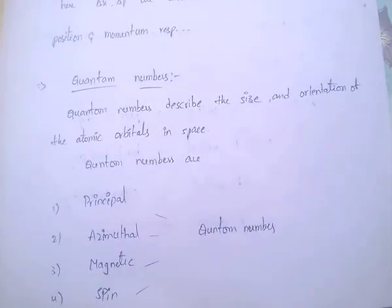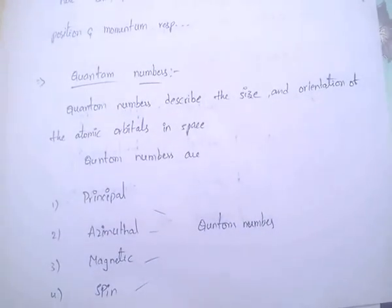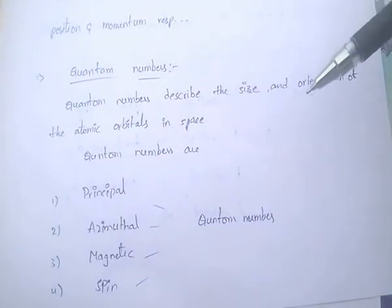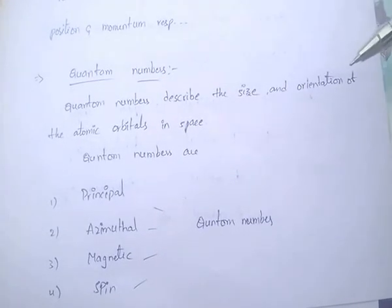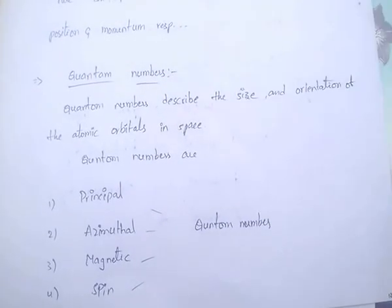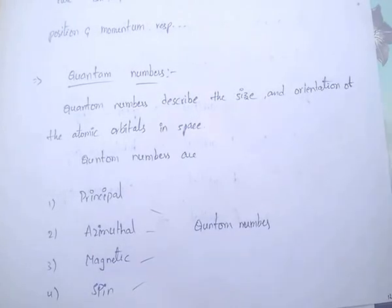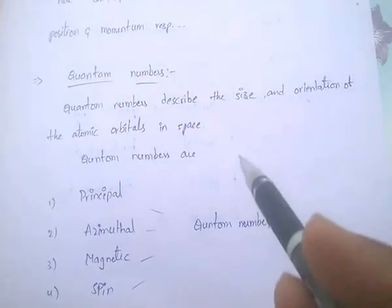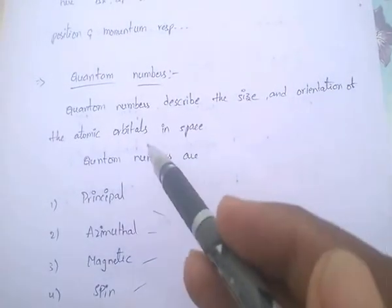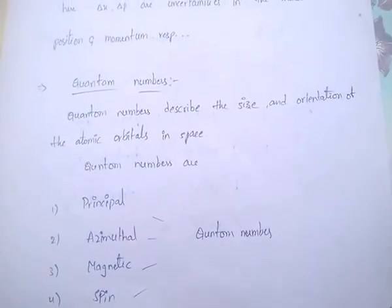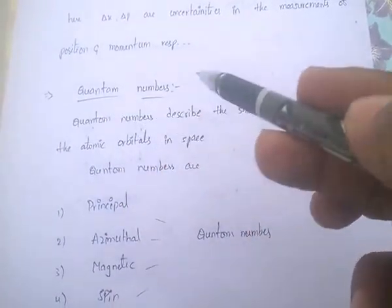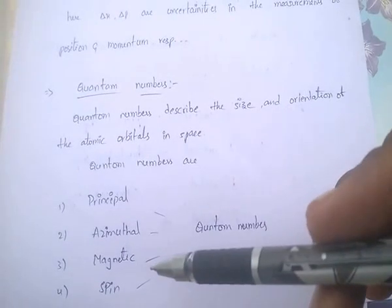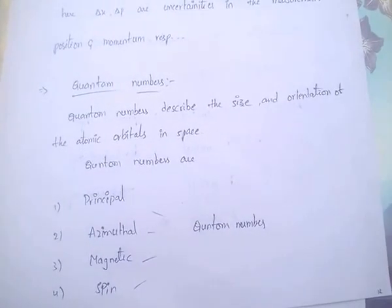Hi friends. In this video I am going to discuss Quantum Numbers. Quantum Numbers describe the size and orientation of atomic orbitals in space. These quantum numbers are mainly four types: Principal Quantum Numbers, Azimuthal Quantum Numbers, Magnetic Quantum Numbers, and Spin Quantum Numbers.